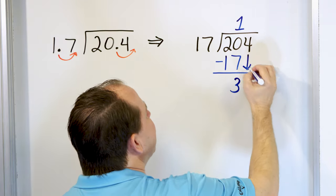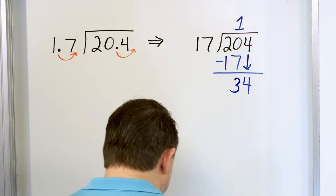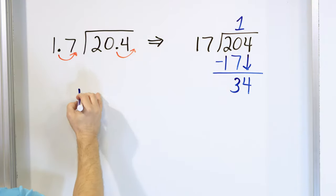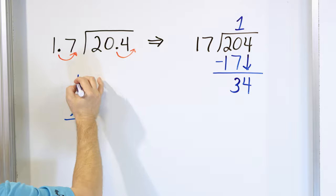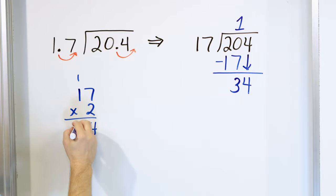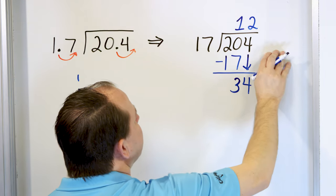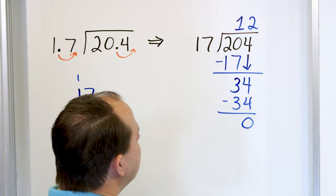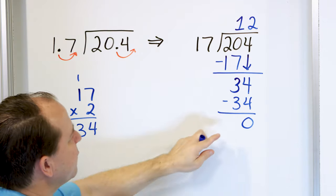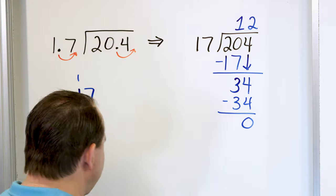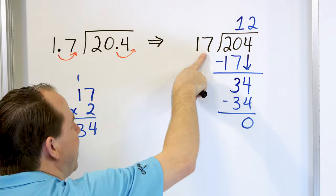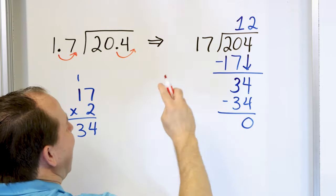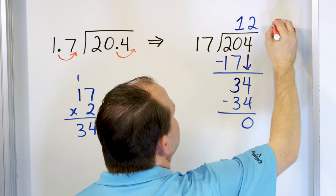After we subtract, we grab the next digit and bring it down. Now we have to figure out 17 times something is 34. We know 17 times 1 is 17. 17 times 2: 7 times 2 is 14, 2 times 1 is 2 plus 1 is 3 — so 17 times 2 is exactly 34. So this has to be a 2. Two times 17 is 34. Subtract — 34 minus 34 is zero. There is no next digit, so we're done. The remainder is zero. We figured out that 204 divided by 17 is 12 — so the answer is 12.